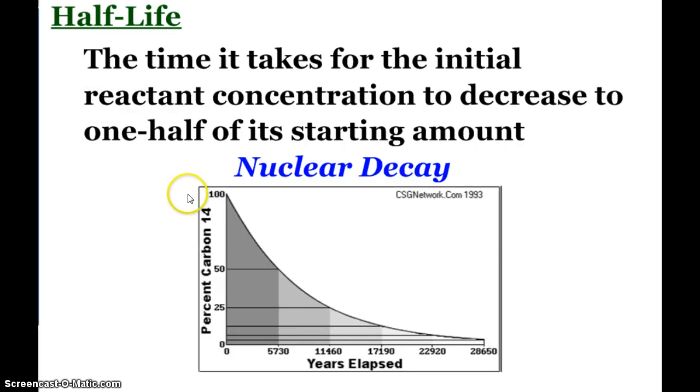But what a half-life does, we start with 100% of the reactant or radioactive material. After one half-life, 50% is consumed, 50% has transferred into product. After another half-life, 75% is consumed, 25% is still there, still reactant, still radioactive. Another half-life, well that would be an additional 12.5%, so 87.5% is consumed, 12.5% is left.